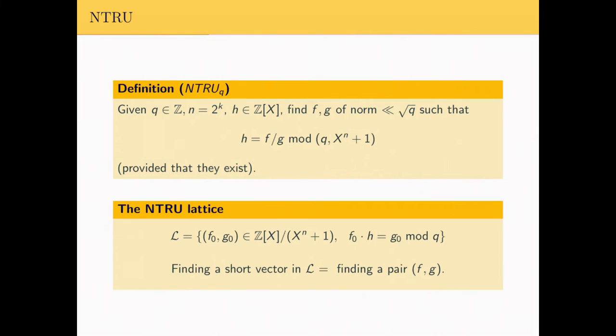This can be seen as finding a small non-zero vector in a lattice L, which verifies that firstly, every element of L are pairs of integral polynomials modulo x to the n plus 1, and secondly, there exist some very short vectors in L.